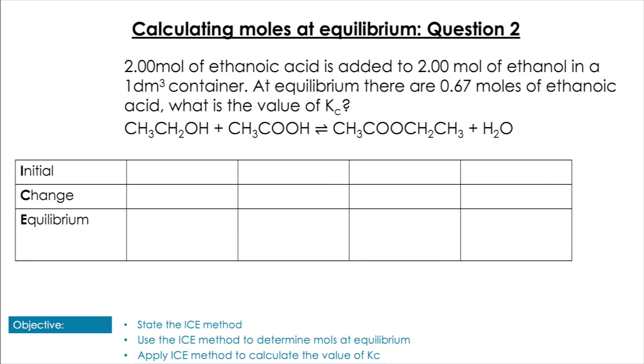Hopefully that wasn't too difficult. We'll follow the same process. The question gives us 2 moles of ethanoic acid, 2 moles of ethanol, and 0.67 moles of ethanoic acid left at equilibrium. We'll plug these values into our table. This question is slightly different because it gives us a reactant at equilibrium. We started with 2 moles of ethanoic acid and have 0.67 at equilibrium. For the changes we have -x and -x for the reactants, and +x and +x for the products. The products start at zero.